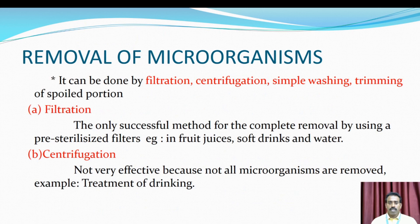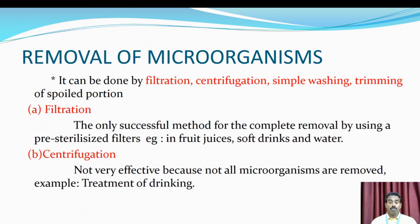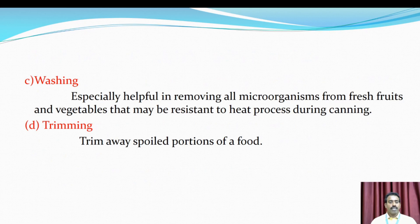Removal of microorganisms can be done by filtration, centrifugation, sedimentation, simple washing, and trimming of spoiled portions. Filtration techniques are the only successful methods for complete removal using pre-sterilized filters — examples include fruit juice, soft drinks, and water. Centrifugation is not very effective because not all microorganisms are removed — example: treatment of drinking water. Washing is especially helpful in removal of microorganisms from fresh fruits and vegetables that may be resistant to heat during canning.